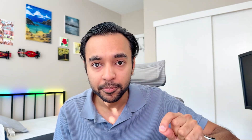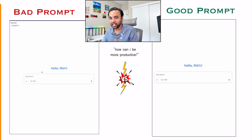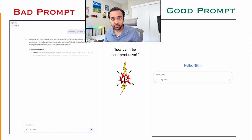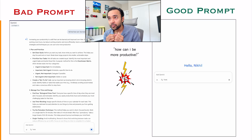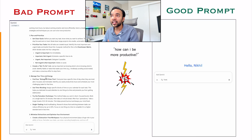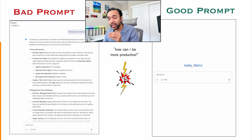Let me show you quickly with a good example. What is the difference between a good prompt and a bad prompt? A bad prompt can look something like this — you are just asking the AI, 'How can I be more productive?' And what kind of answer are you getting? You are just getting a general answer: setting clear goals, prioritized tasks, all of these things.